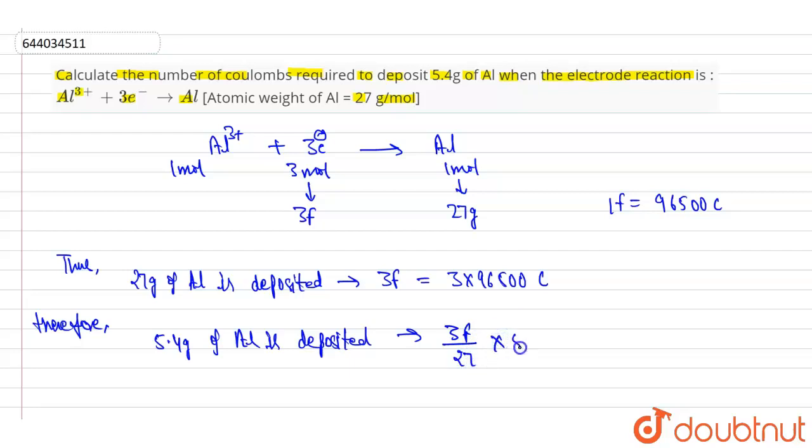Now with solving, we get 57,900 coulombs.